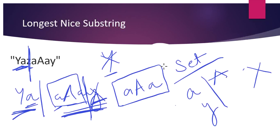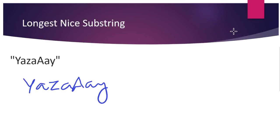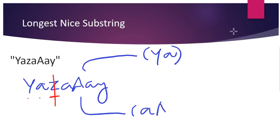Since this process of finding substrings, adding characters to a set, and checking for corresponding uppercase or lowercase pairs repeats, we make it a recursive solution. The recursive function starts from the whole string 'yAzaay', iterates and checks if any character is missing its pair. Both 'y' and 'A' have their pairs, but 'z' does not, so we split there and recursively call the function on two substrings: 'yA' and 'aAay'.